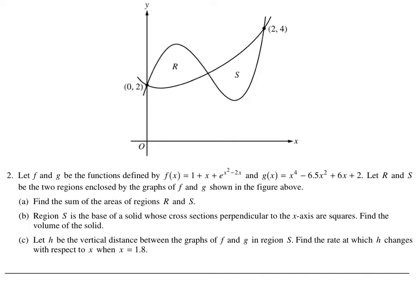They actually make you do a little bit more work here. To find the area of r, we need to make an integral from zero to wherever that intersection is. To find the area of s, we need to make the integral from that point to two, because two is the farthest x value.